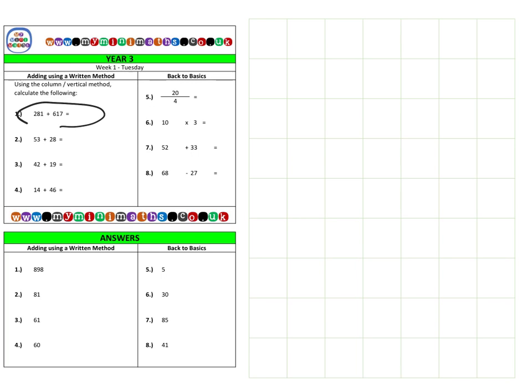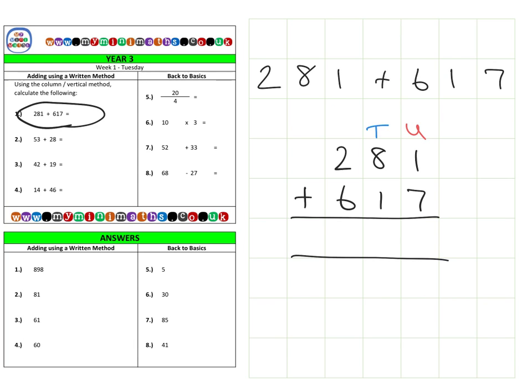First of all, we're going to look at question one, which continues from Monday's lesson with adding a three-digit number and a three-digit number together. So we have 281, we're going to add that to 617. Let's have a little look. We're going to look at the column method for this question. We have 281, I'm going to add it to 617, and again we're going to look at the units, tens, and the hundreds. This is a very important part of maths and numeracy, so you can split up the number into different sections. First of all, we're going to look at adding together the units. That's one unit and seven units, that gives us a total of eight units.